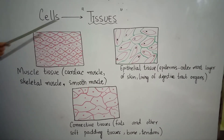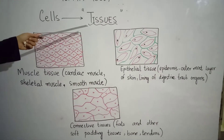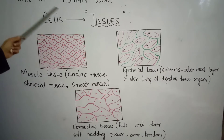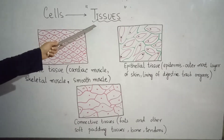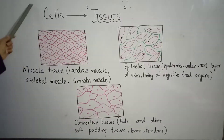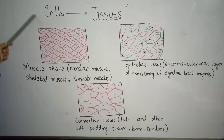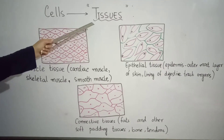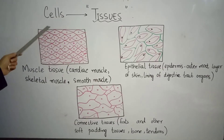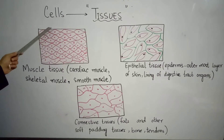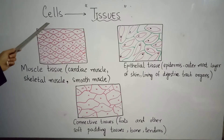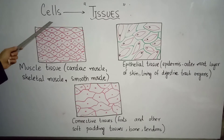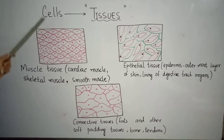Our second topic is tissues. What are tissues? When cells combine, they form tissues. In tissues, the cells are not different — they are the same type of cells doing the same job.